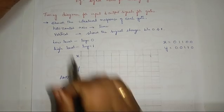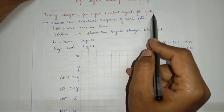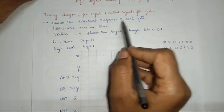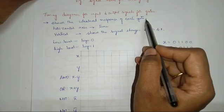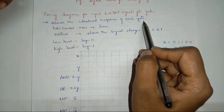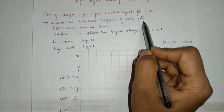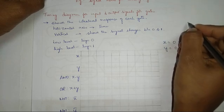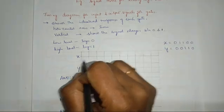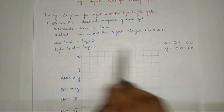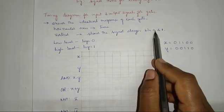The next concept is the timing diagram for input and output signals of gates. What is the timing diagram? A timing diagram shows the idealized response of each gate — meaning how each gate will give an output for each input value. That is, how the AND gate will react whenever the input is 1 and 0, or 1 and 1. We will show that in a graphical way; it is called a timing diagram. On the horizontal axis, time is mentioned; the vertical axis shows the signal changing between 0 and 1.